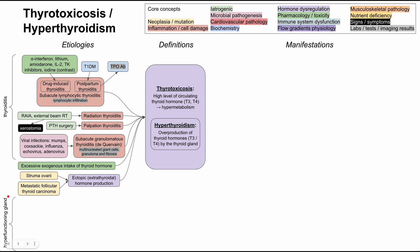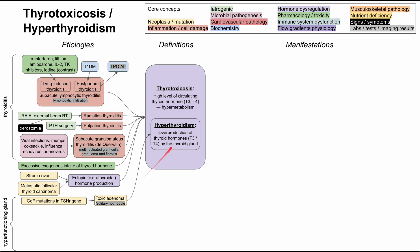This last group of etiologies all relate to a hyperfunctioning gland — these will all be hyperthyroidism. First is toxic adenoma, when you have a nodule on the thyroid that's overproducing thyroid hormones. On scintigraphy scan, you'll see a solitary hot nodule. Toxic adenoma is usually caused by a gain-of-function mutation in the TSH receptor gene.